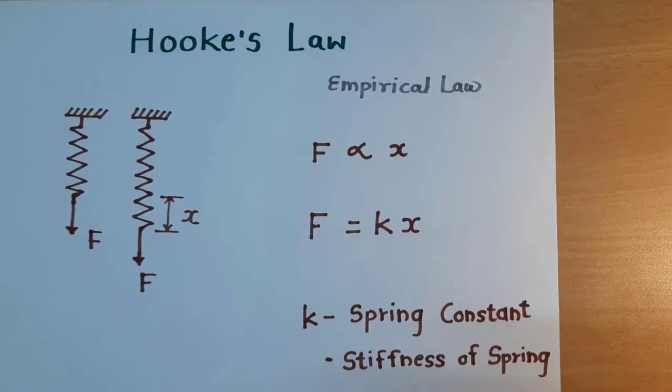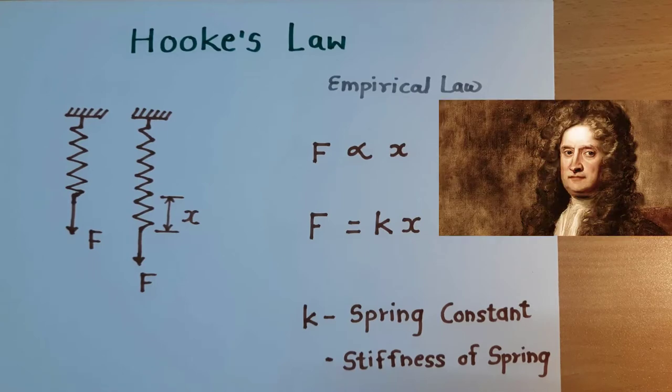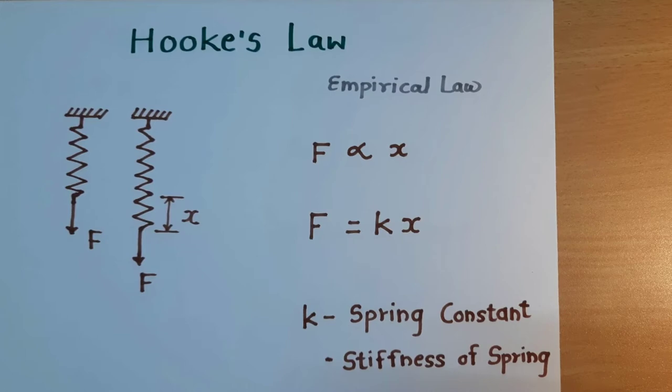Hooke's law is stated by Robert Hooke in 17th century. So it is also called as empirical law because it is derived based on the observations. So what was the observation? Let's talk with the example.